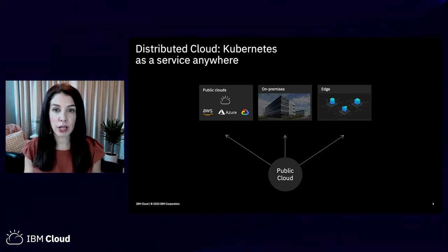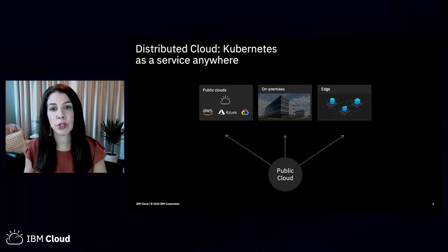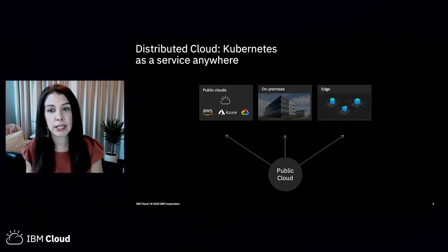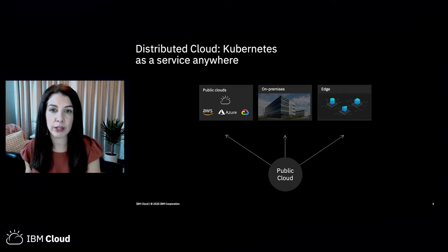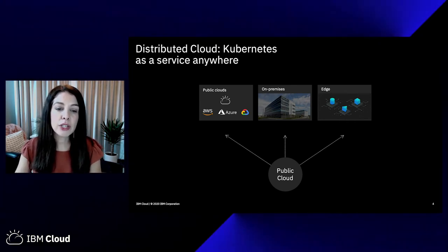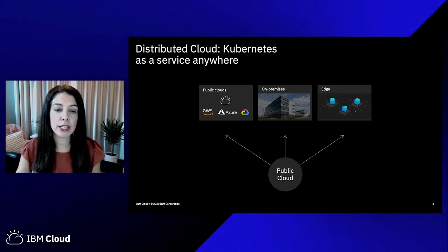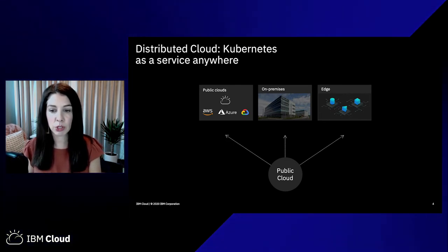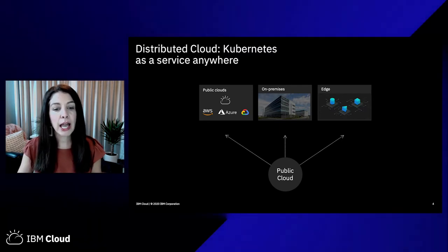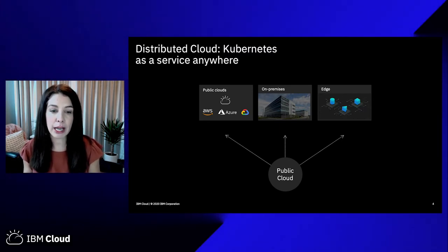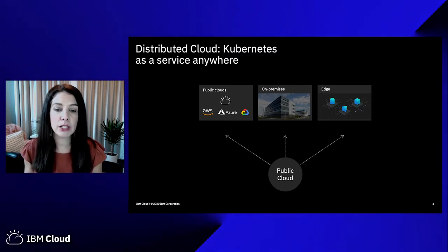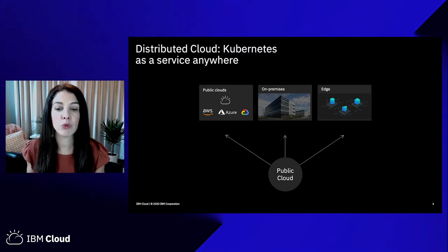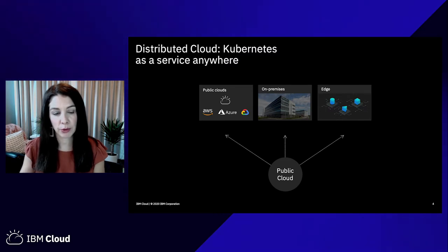Different public cloud examples, on-prem examples, or even at the edge. The key point here is that distributed cloud enables you to take advantage of a public cloud consumption model, but in many different locations. And you don't have to be an expert in running these software stacks to run them outside of the public cloud.